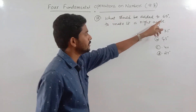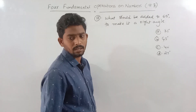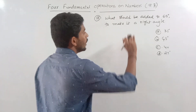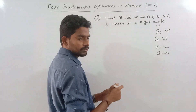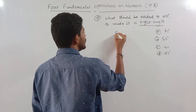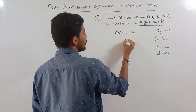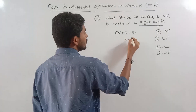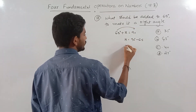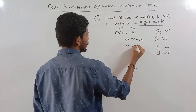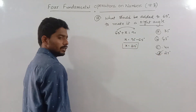Next: what should be added to 65 degrees to make it a right angle? A right angle is 90 degrees. So we calculate 90 − 65 = 25 degrees. You need to add 25 degrees to 65 degrees to make it a right angle.